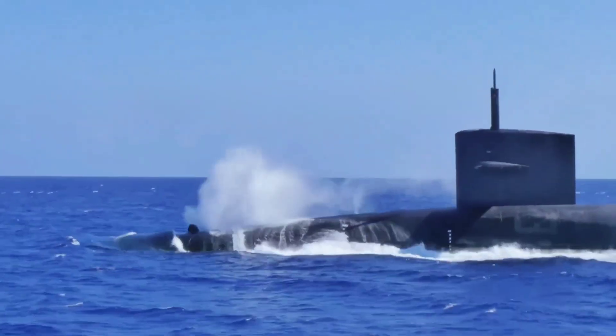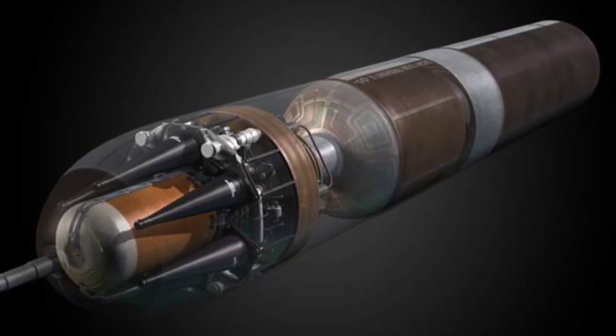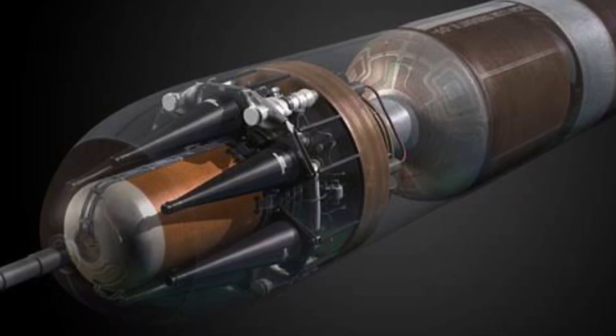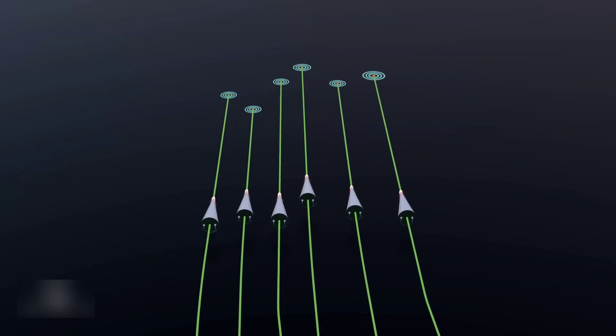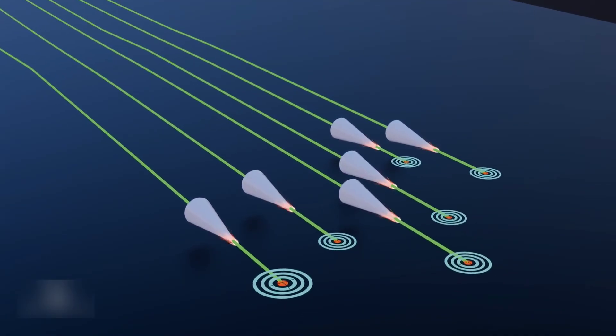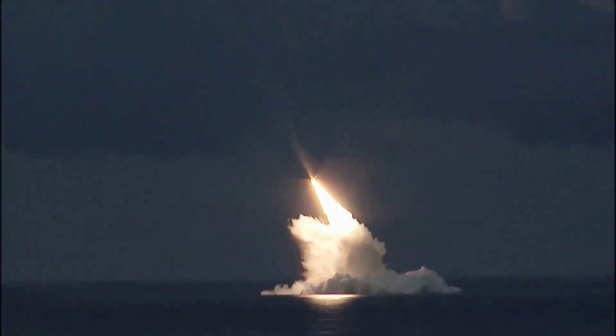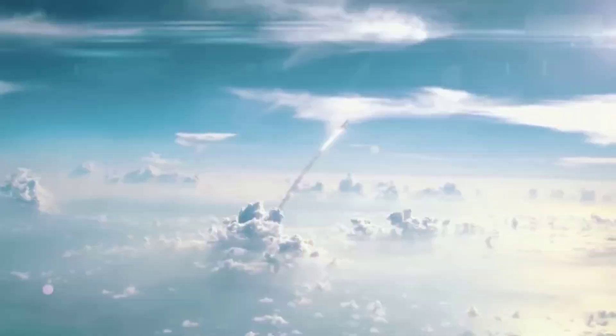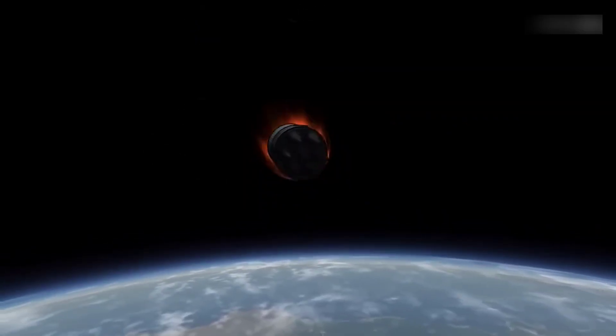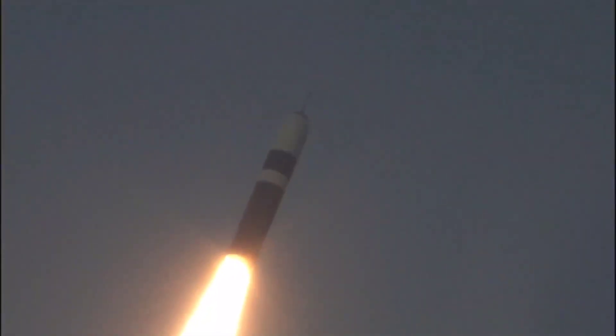Deployed on Ohio-class submarines since 1990, the Trident II can carry multiple independently targeted nuclear warheads, each capable of hitting different locations, thousands of kilometers apart. Once launched from beneath the ocean's surface, the missile breaks through the waves and accelerates into space, reaching speeds of up to Mach 24 during re-entry, which is nearly 30,000 kilometers per hour.